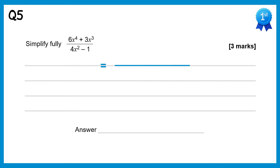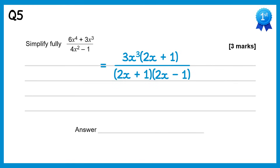When we factorise the top of this one we get 3x cubed lots of 2x plus 1, and if you factorise the bottom it's the difference of two squares again — so 2x plus 1 times 2x minus 1. The 2x plus 1s will cancel, and we get 3x cubed over 2x minus 1.